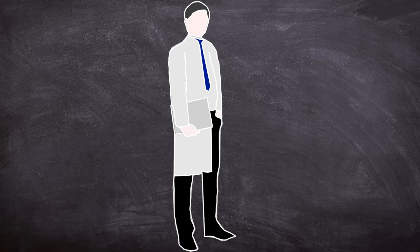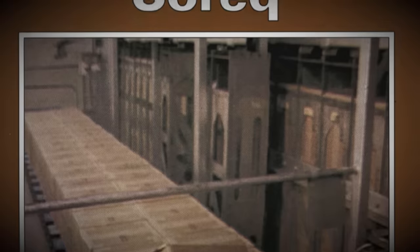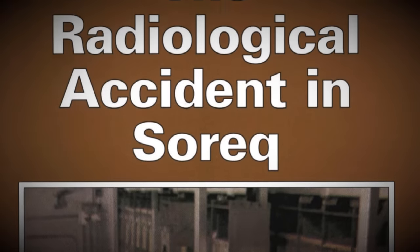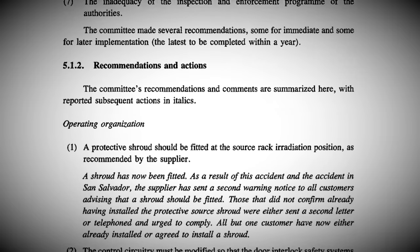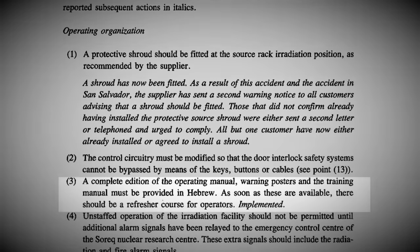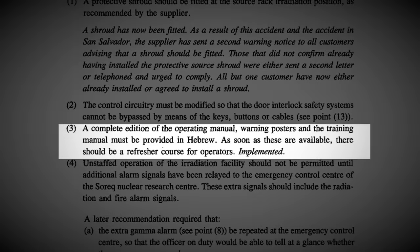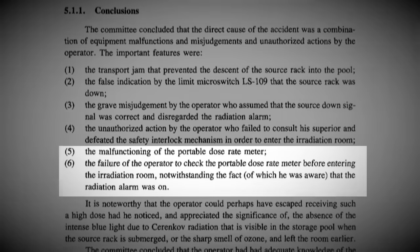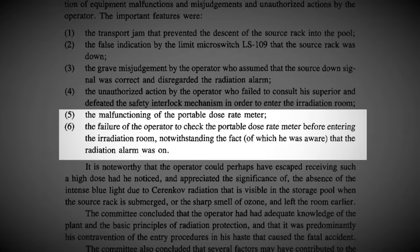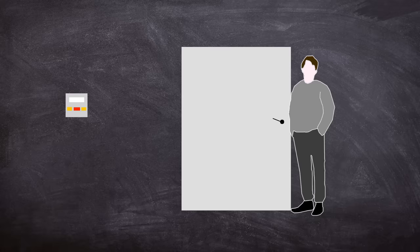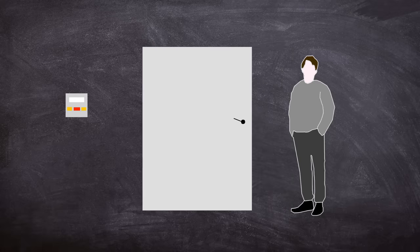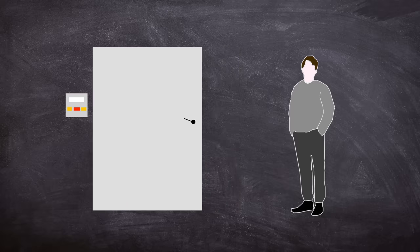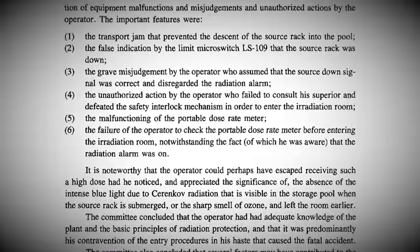Investigators set out to find out why the operator acted as he did. As noted in the IAEA report, that a properly translated manual for the operators could have helped with fault finding, as well as stricter training, by properly configuring any portable radiation monitors before entry to an irradiation area. Moreover, if the operator had followed the rules and requested another member of staff to assist, then the dangerous path he went down likely wouldn't have happened.